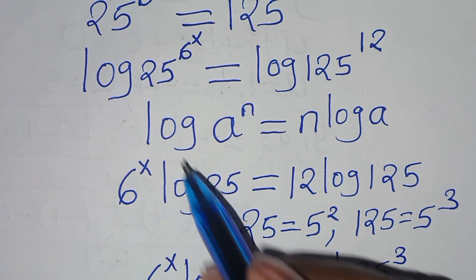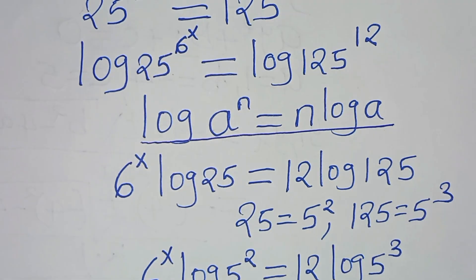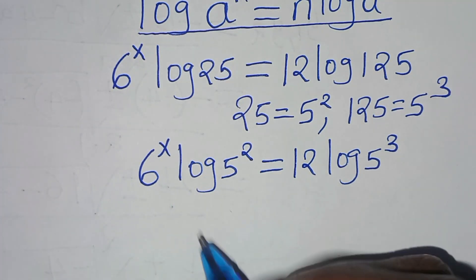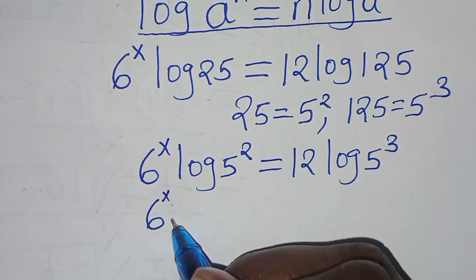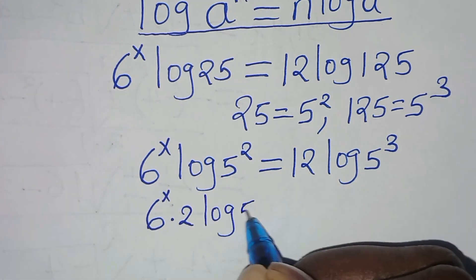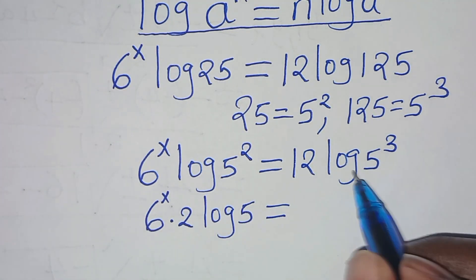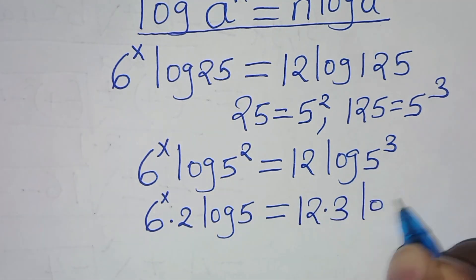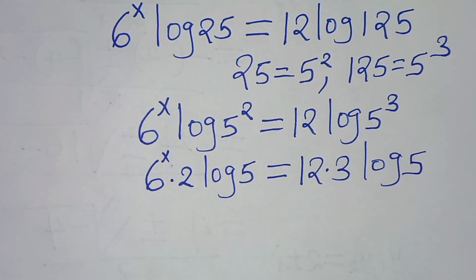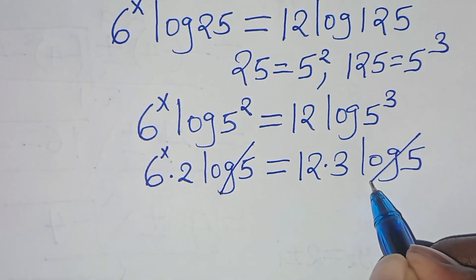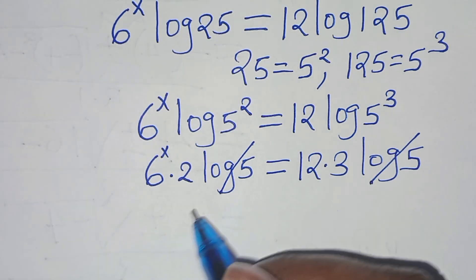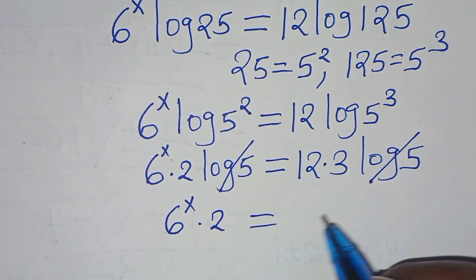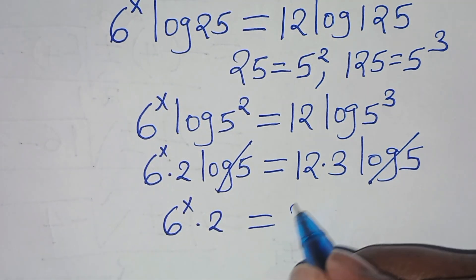Applying the power property again, log 5 to the power of 2 becomes 2 log 5, and log 5 to the power of 3 becomes 3 log 5. So we have 6 to the power of x times 2 log 5, equal to 12 times 3 log 5. We then simplify log 5 on both sides, so that we have 6 to the power of x times 2 equals 36.